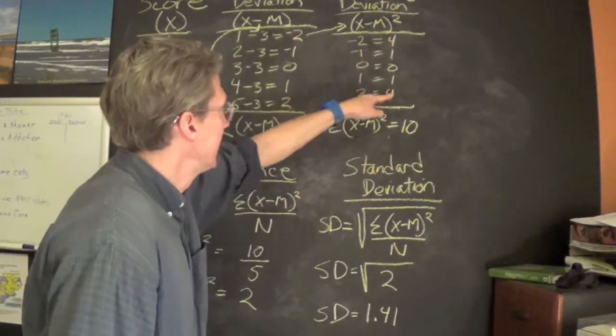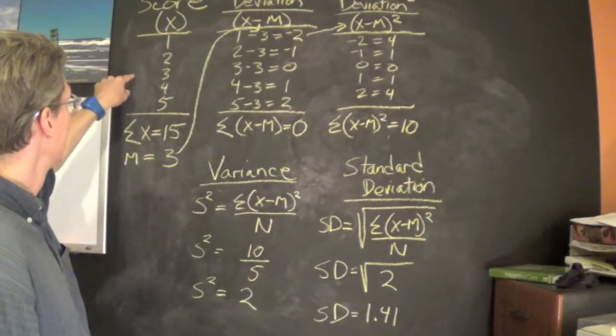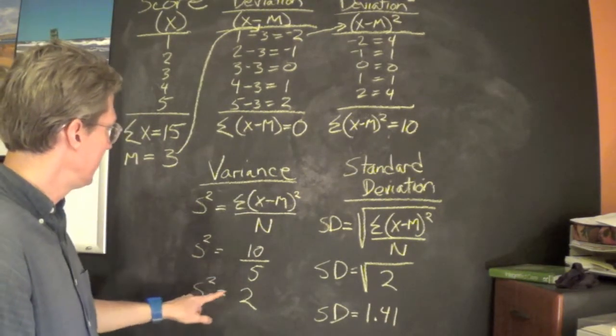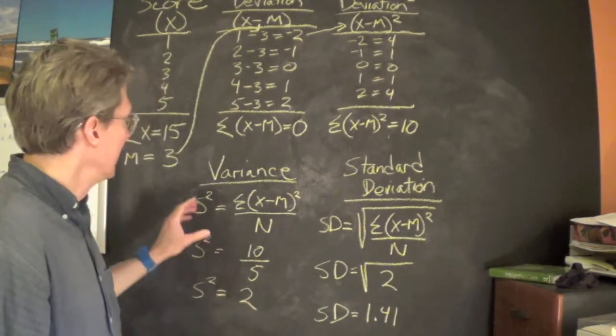We sum these items up, we get 10, divided by the sample size of five. One, two, three, four, five—five people took this test. Divide by five and we get a variance of two.